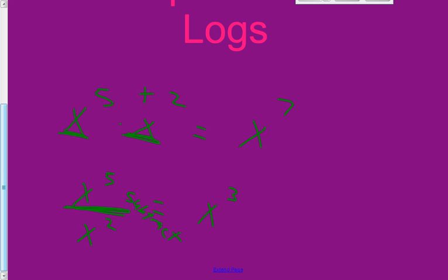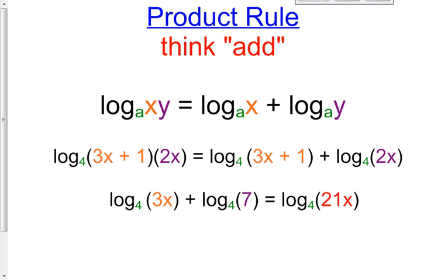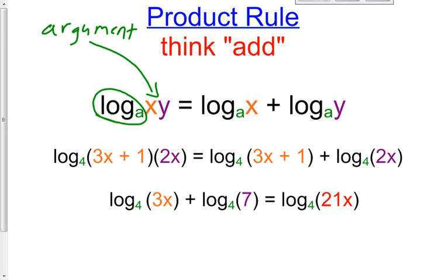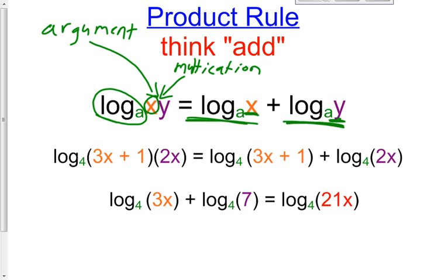That's going to be very similar to what we'll see in this lesson. The product rule says: if you have a log with a base A, and the argument is a product, you can separate them to make log base A of X plus log base A of Y. Because this is multiplication, you can separate their logs — this is called expanding it — and have the exact same base with those products added together.